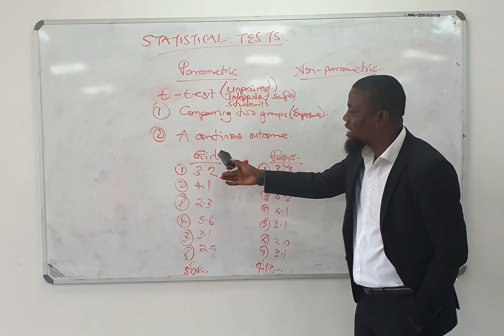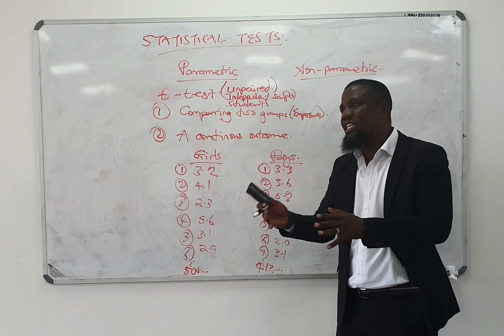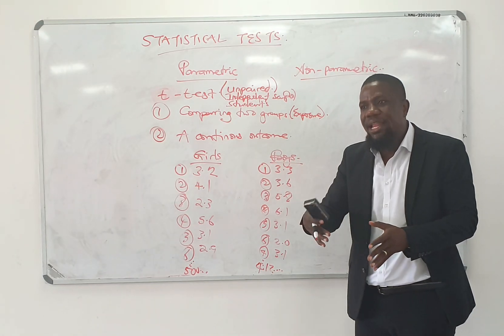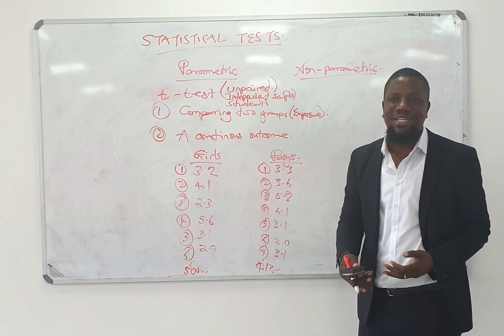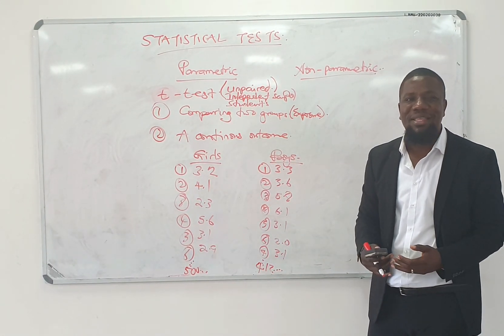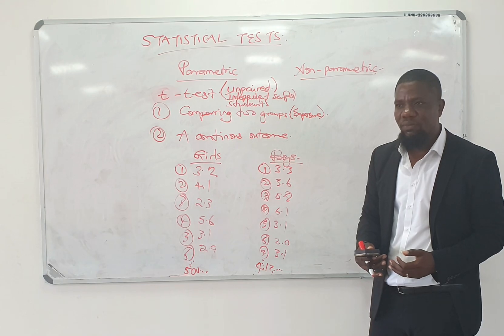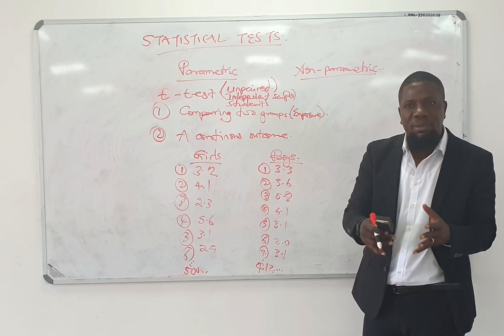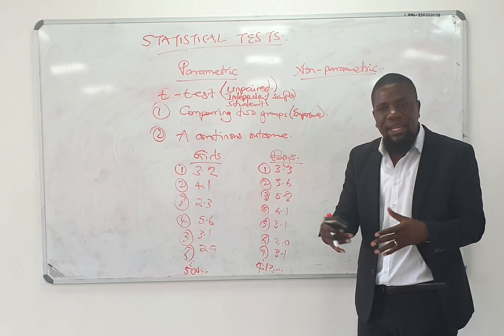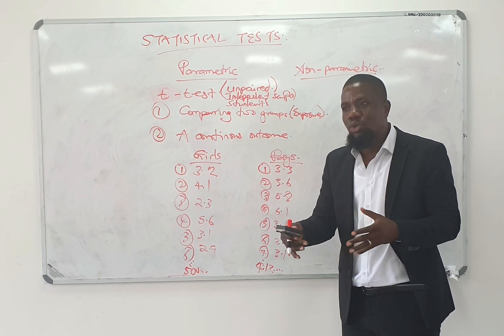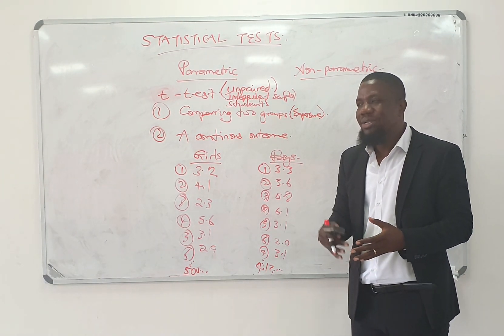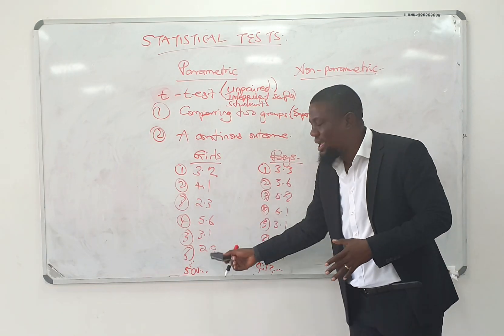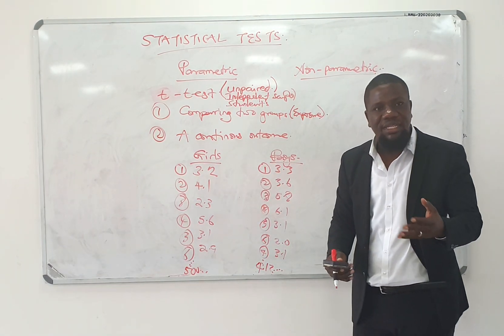If a child is exposed to a certain sex, does it explain the age at which they will start school? My child being a boy or the child being a girl — does that explain the age at which they will start school? Does the sex explain the outcome of the age? That's the question.